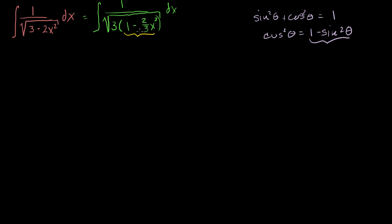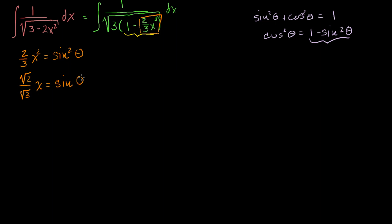Now this expression looks a lot like that trig identity. If I substitute — if I set this 2/3 x squared equal to sine squared theta — I will be able to use this identity. So let's set 2/3 x squared equal to sine squared of theta. If we take the square root of both sides, I get the square root of 2 over the square root of 3 times x is equal to the sine of theta. Now we're going to have to solve for both x and for theta.